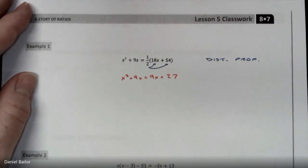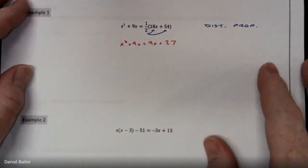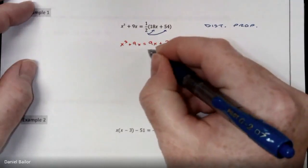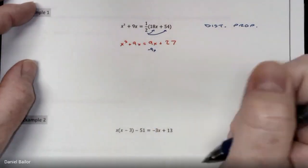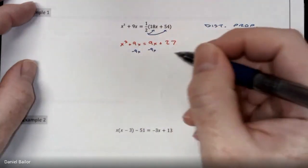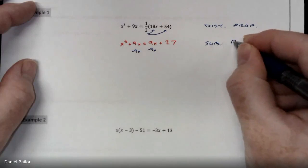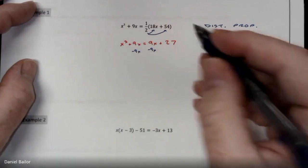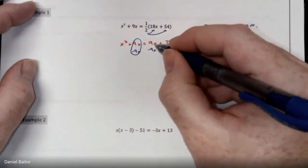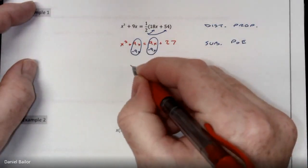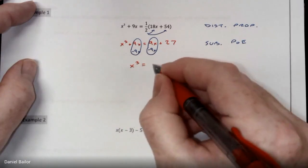Your goal when solving equations is isolating x — getting x all by itself. I want all the x's on one side and numbers on the other. I'm going to do minus 9x on both sides using the subtraction property of equality, because 9x minus 9x is 0. What I'm left with is x cubed equals 27.